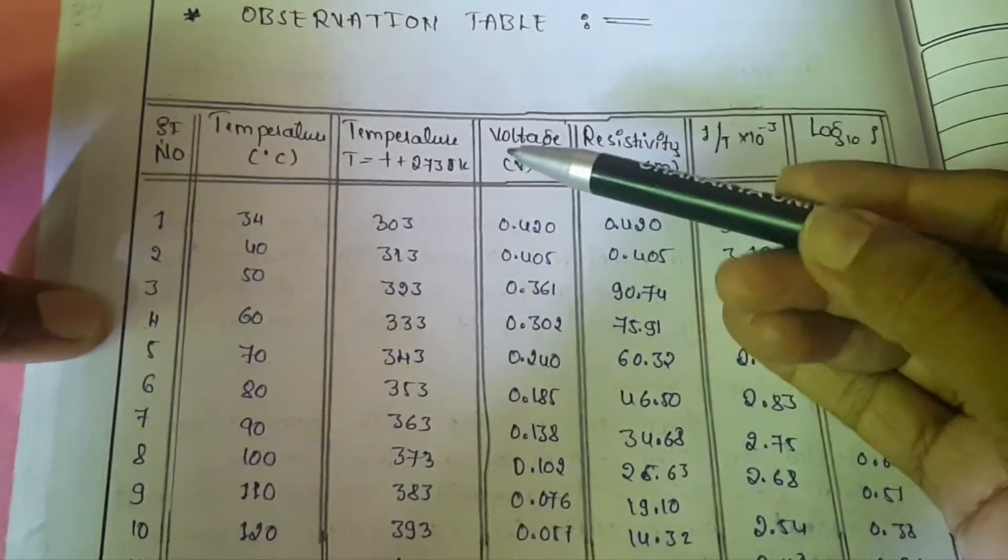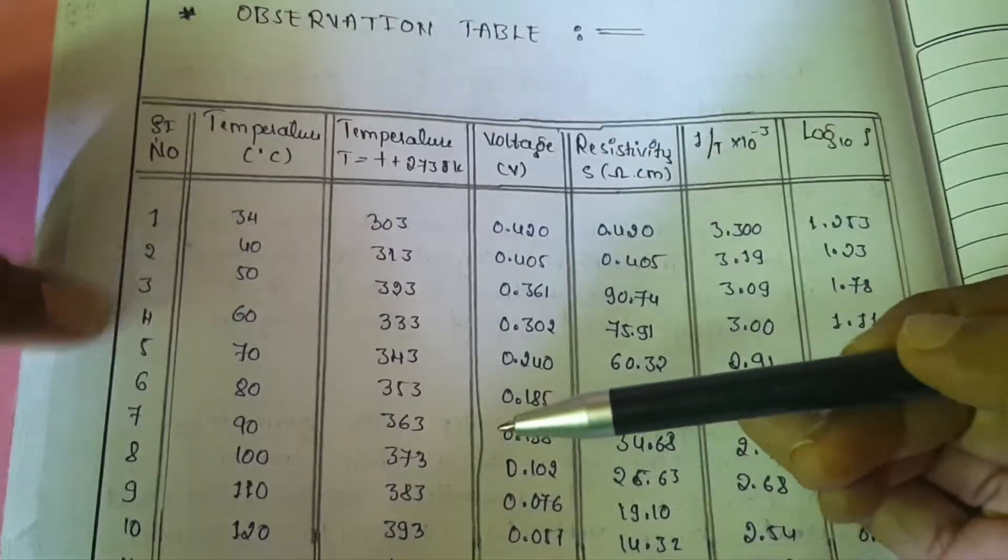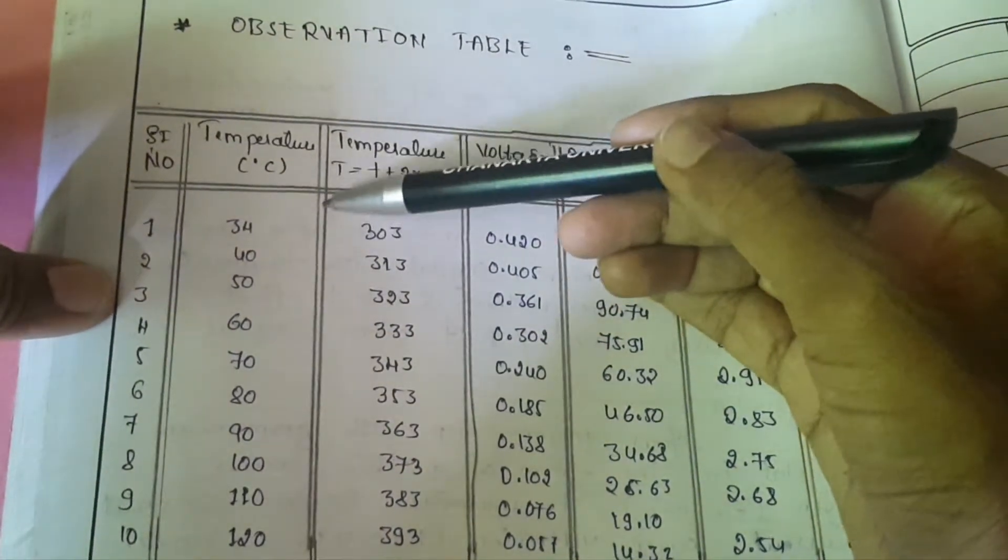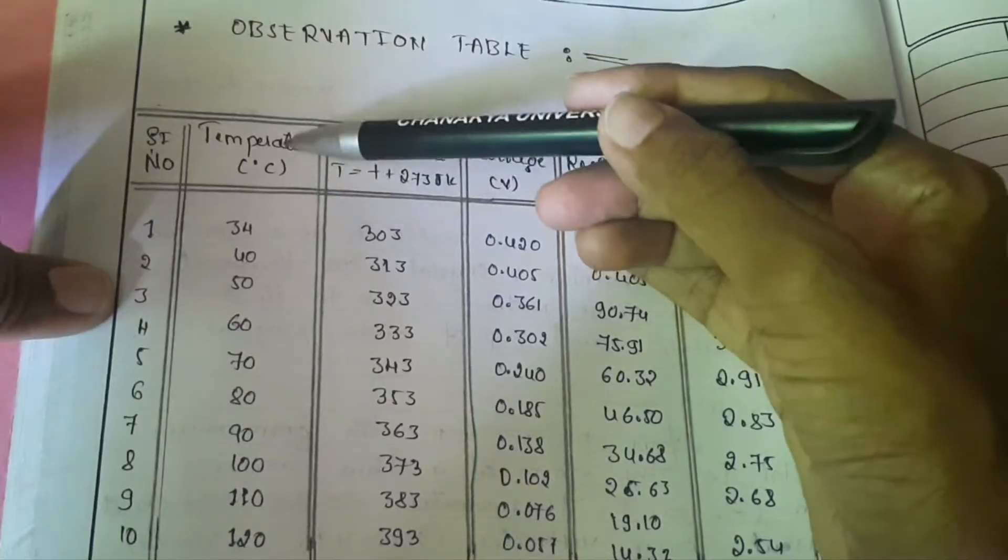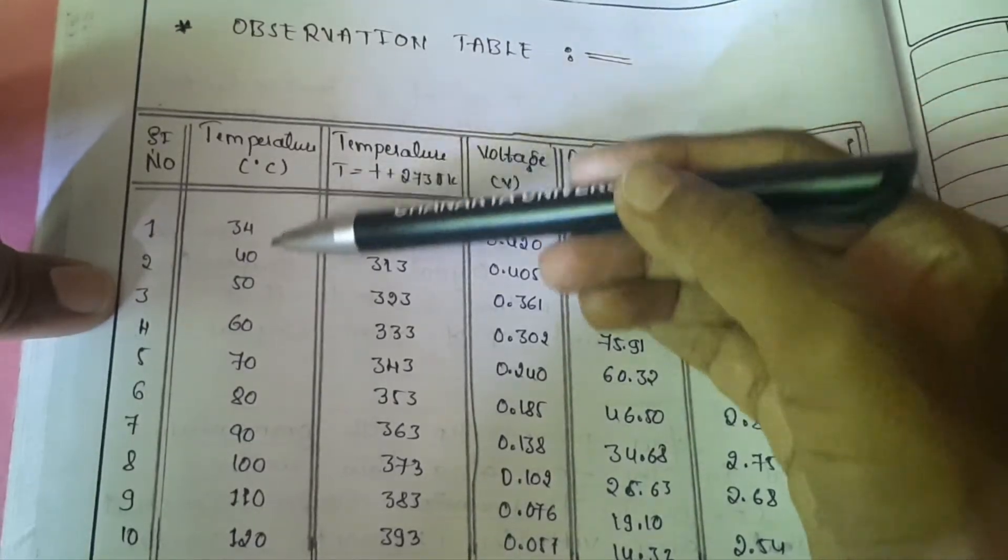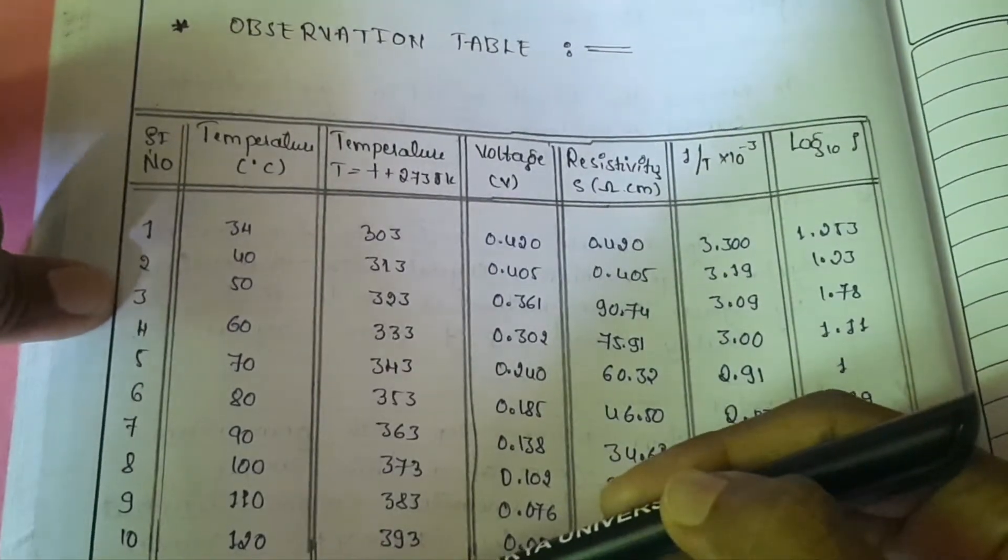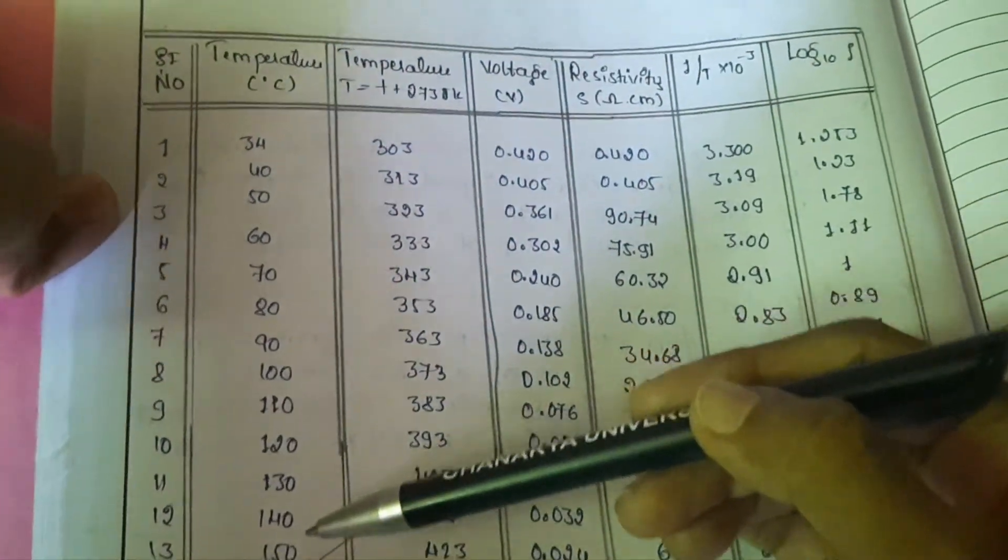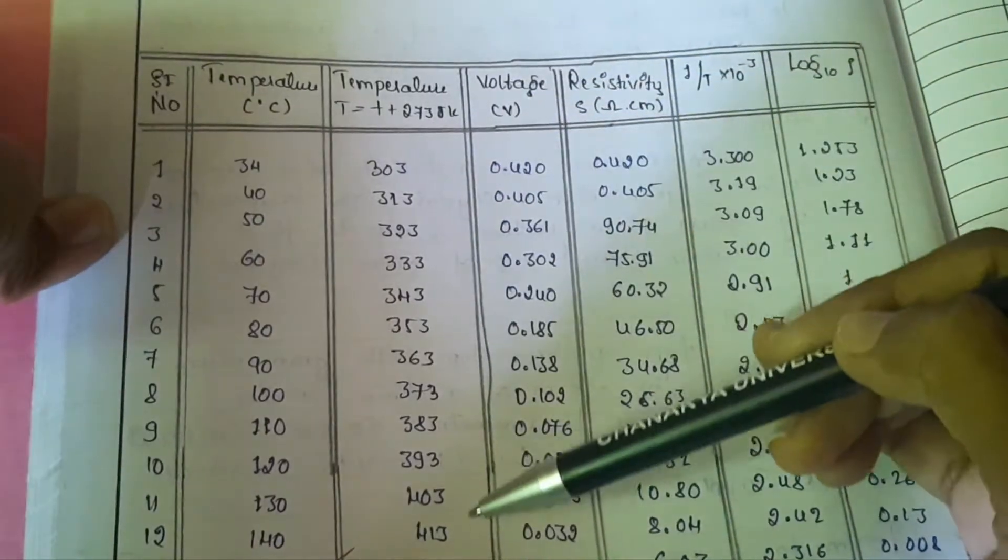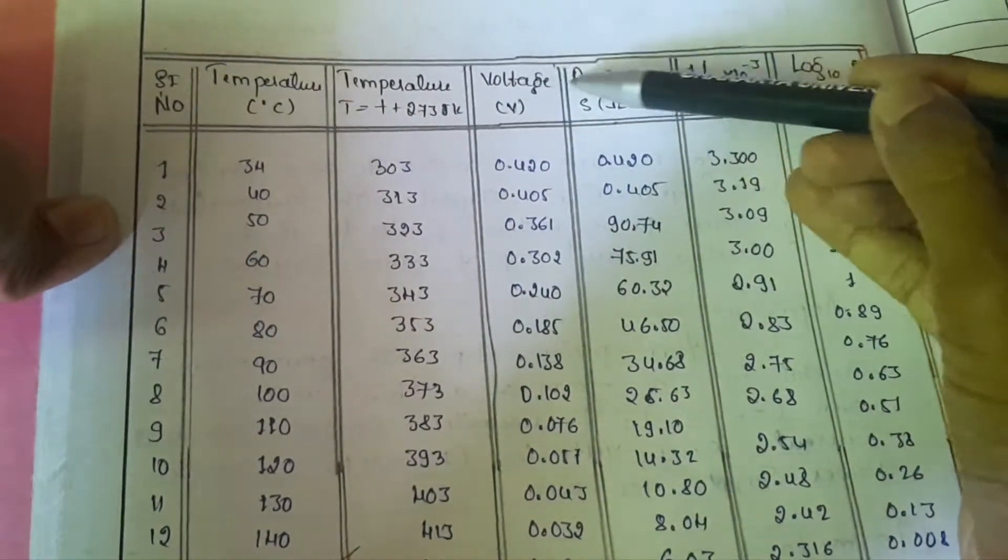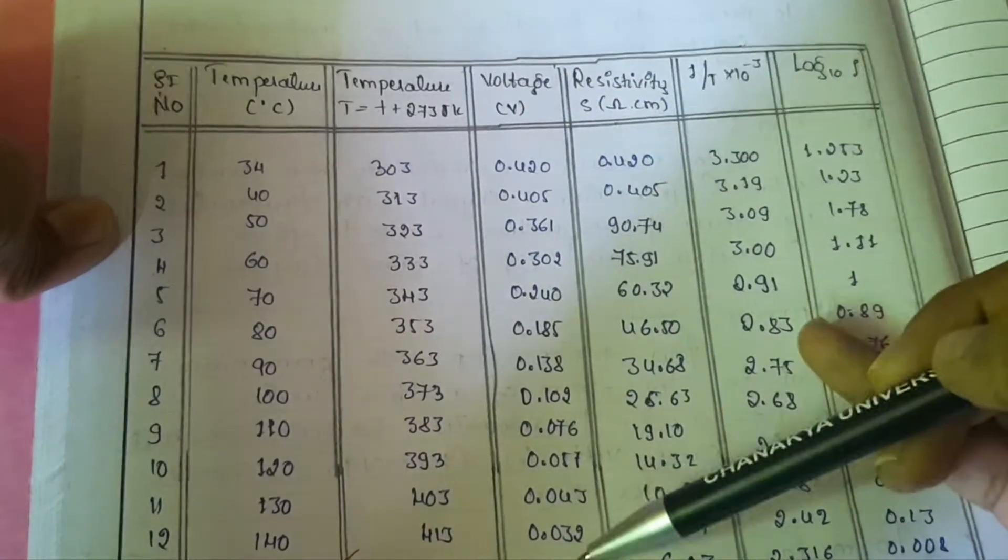This is the tabular column to note on the temperature and the corresponding voltage. First, as you have seen in this setup, you have to increase the temperature from room temperature you can start, and up to 150 degree Celsius you can take the reading, and convert that into Kelvin.